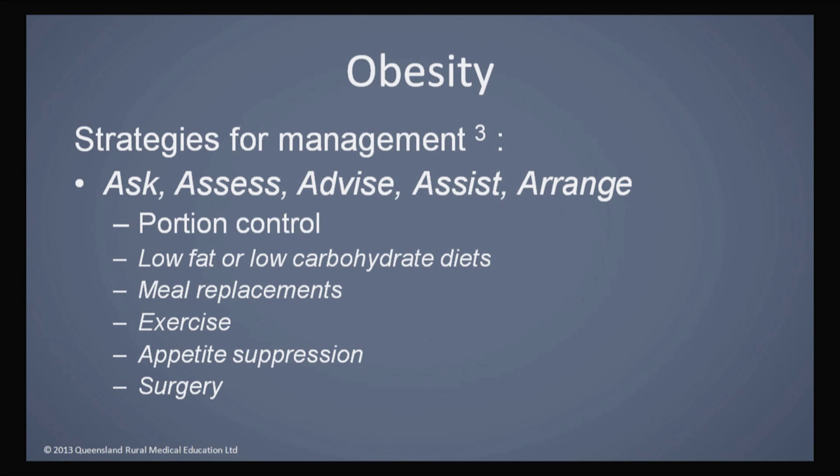Looking at management, an RACGP article suggested that with every patient who is obese, we should use the following strategy: ask, assess, advise, assist, and arrange. So first, ask and assess the patient — measure them so you know exactly how overweight they are. Then provide advice and assist them to make lifestyle changes, and arrange for a multidisciplinary team to be involved in that management. It's a mnemonic used for many lifestyle and behavioural change problems.